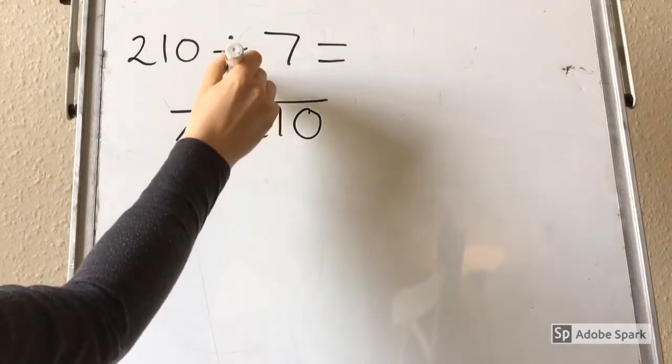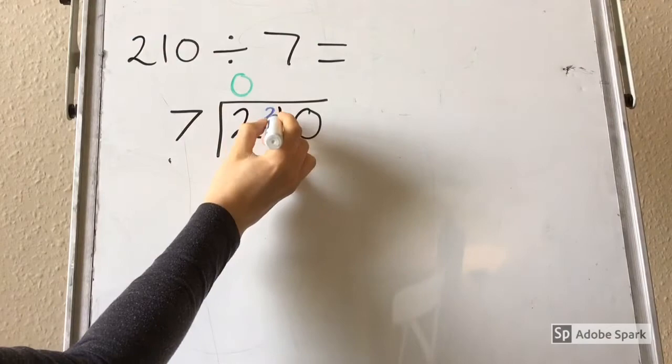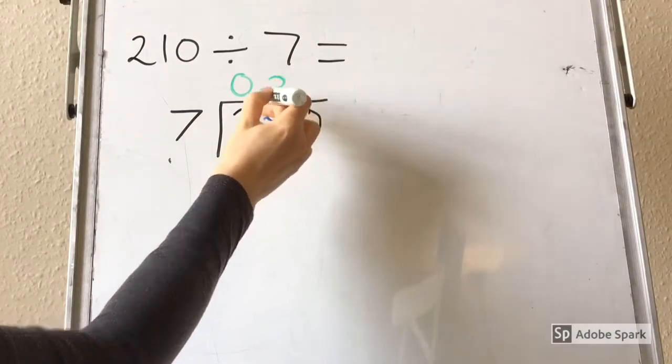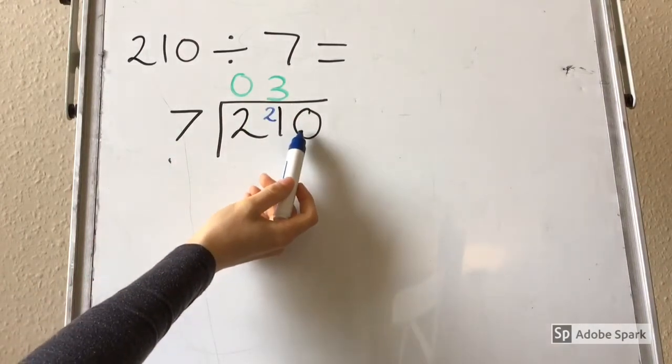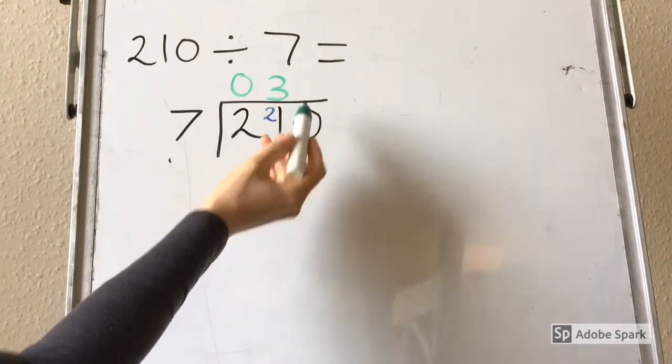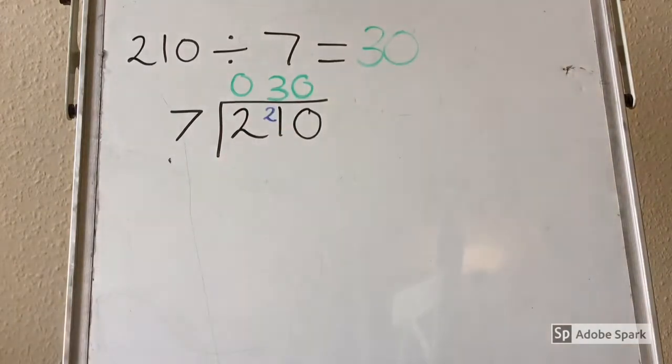So we start by thinking about how many times 7 goes into 2. It doesn't go into 2, so we carry the 2 across. 7 into 21 goes 3 times, so we are going to put the 3 on top, and there is nothing to carry. We have got a 0 left over, so we still need to ask ourselves how many times does 7 go into 0. It doesn't go in at all, so we put a 0 above. So we know that 210 divided by 7 is 30.